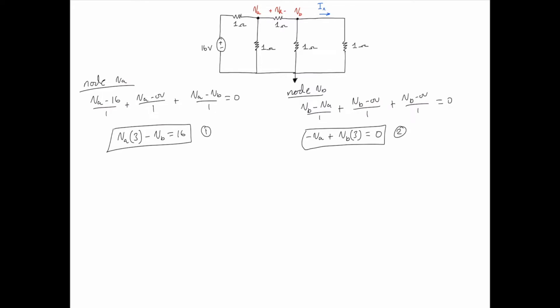Simultaneously solving equations 1 and 2, we get VA = 6 volts and VB = 2 volts.